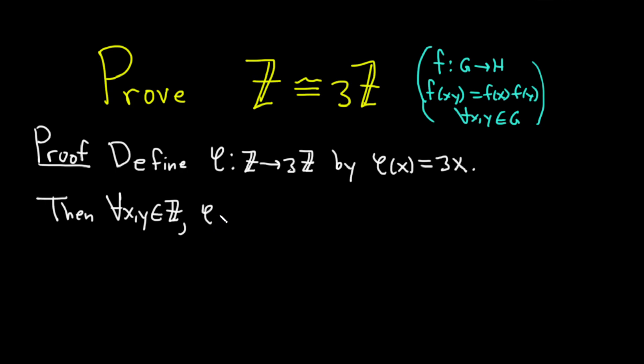We have phi of x plus y. Well, what is this equal to? This is going to be 3 times x plus y, because we have phi of x equals 3x. If we're looking at phi of x plus y, we just replace the x with x plus y. This equals 3x plus 3y. Oh, look at that. That's equal to phi of x plus phi of y. Beautiful.